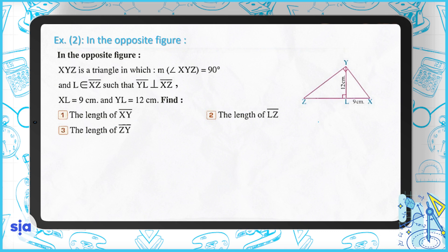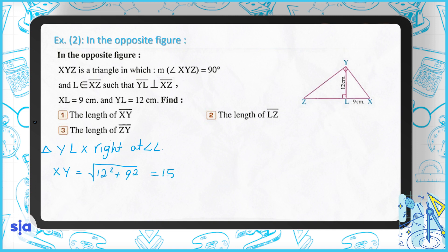Exercise number two: find the lengths of XY, LZ, and ZY. Since triangle YLX is right-angled at L, XY = √(12² + 9²) = √(144 + 81) = √225 = 15 centimeters.